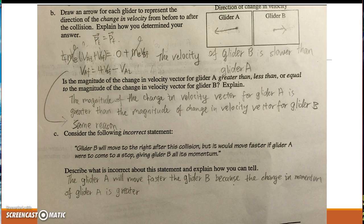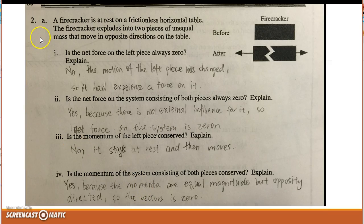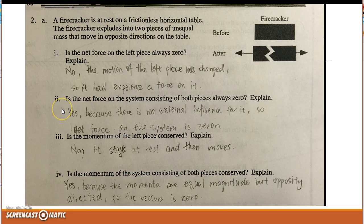Part C: glider A will move faster than glider B because the change in momentum of glider A is greater. Question 2, part A: my answer is no, because the motion of the left piece was changed and there is an explosion force on it. For the next question, I say yes because there is no external influence, so the net force on the system is zero.